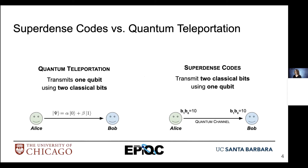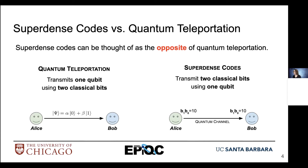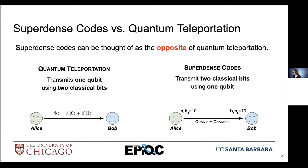This sounds very similar to teleportation, but what is the difference? We can think about superdense codes as being the complete opposite of teleportation. Quantum teleportation uses a classical communication line and two classical bits to transmit one qubit between Alice and Bob. With superdense codes, we transmit two classical bits from Alice to Bob using one qubit over a quantum channel.